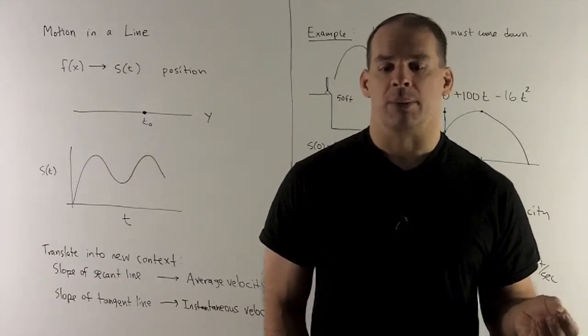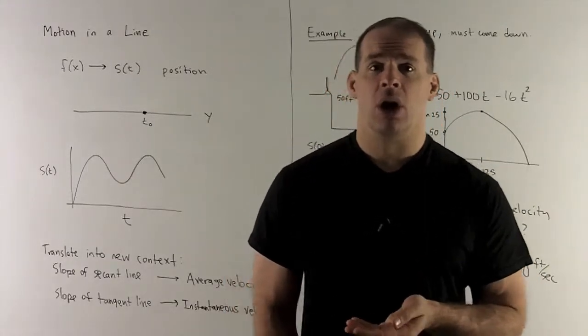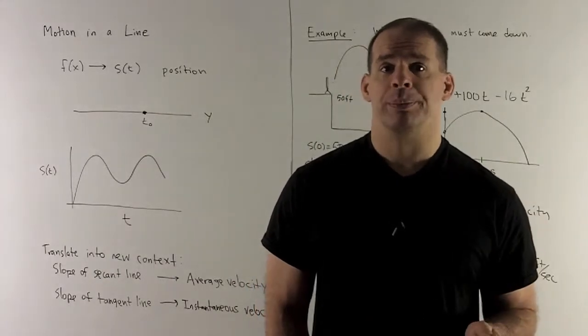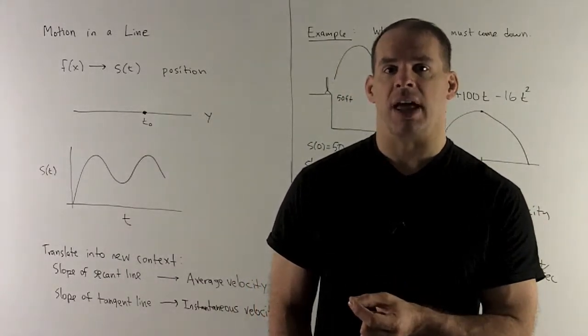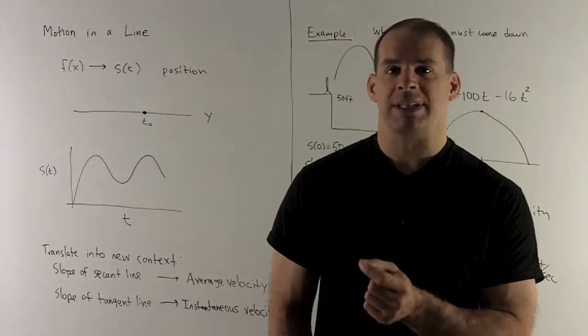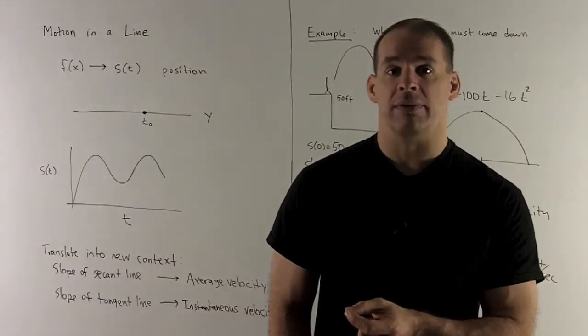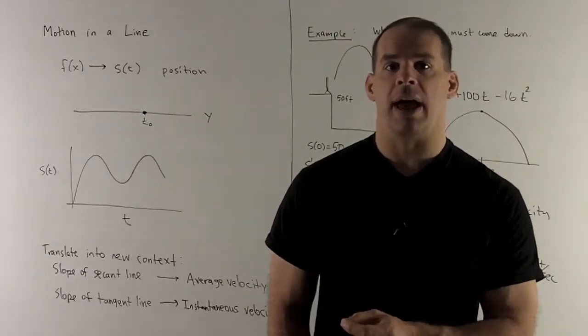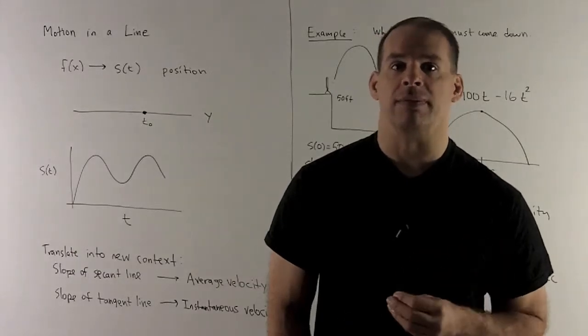So think of it this way. I'm going to have a line. It's going to be either horizontal or vertical. There's going to be a bug that lives on this line. At each time t, I'm going to take a snapshot of the position of the bug on the line. That's how we're going to get our function.